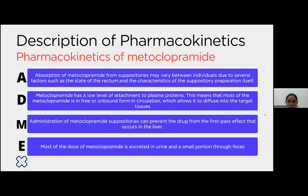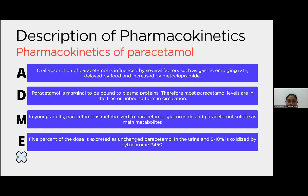Administration of metoclopramide suppositories can prevent the drug from the first-pass effect that occurs in the liver. Most of the dose of metoclopramide is excreted in urine, and a small portion through feces. The pharmacokinetics of paracetamol: oral absorption of paracetamol is influenced by several factors such as gastric emptying rate, delayed by food, and increased by metoclopramide. Paracetamol is minimally bound to plasma proteins.